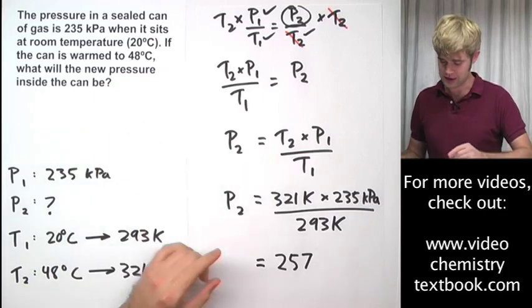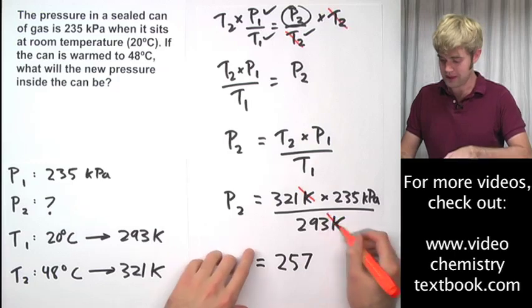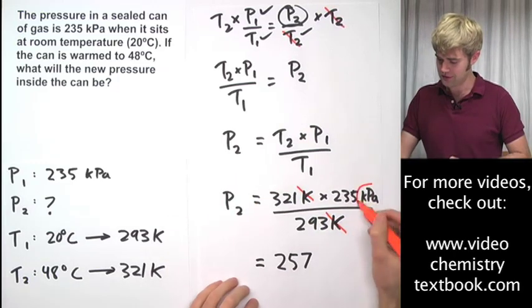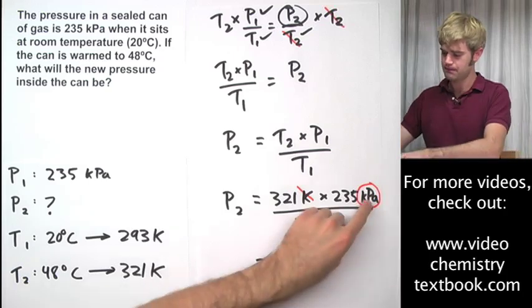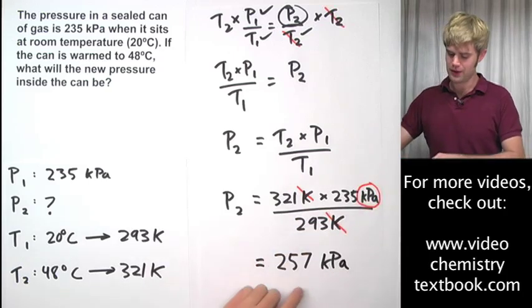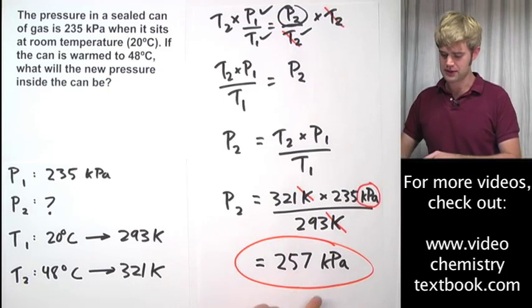But let's just show how we'll do the unit cancels here. We have Kelvin up here and Kelvin up here, I mean down here on the bottom. So we're going to get rid of the Kelvin and we're going to be left with kilopascals which obviously is a unit of pressure.